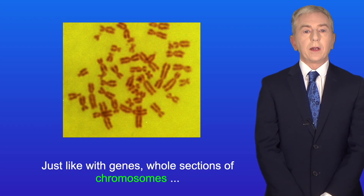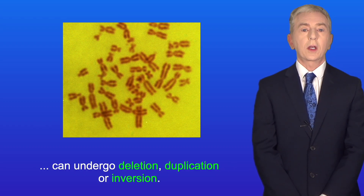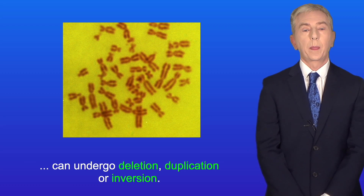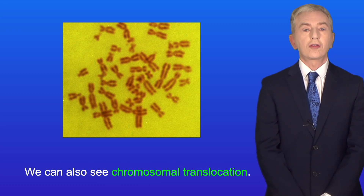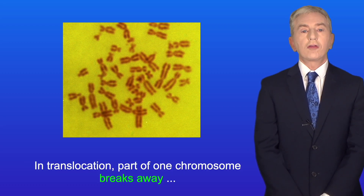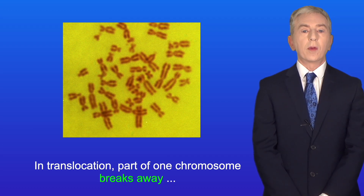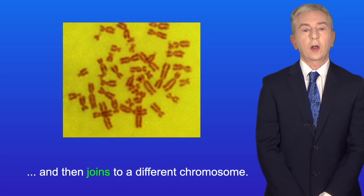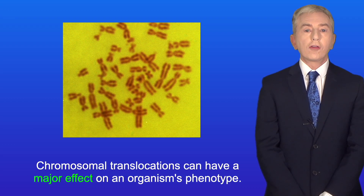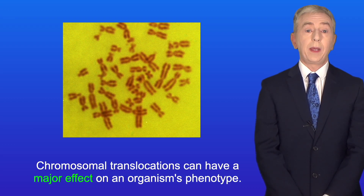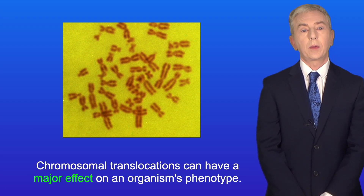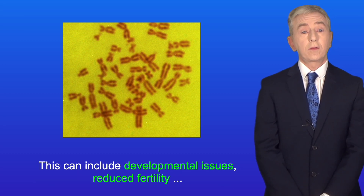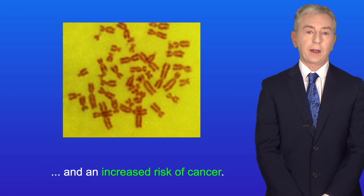Just like with genes, whole sections of chromosomes can undergo deletion, duplication or inversion. We can also see chromosomal translocation. In translocation, part of one chromosome breaks away and then joins to a different chromosome. Chromosomal translocations can have a major effect on an organism's phenotype, including developmental issues, reduced fertility and an increased risk of cancer.